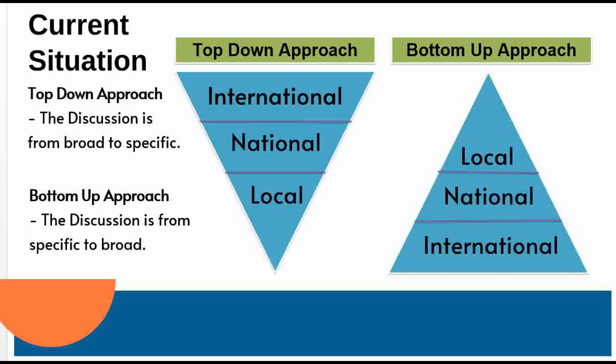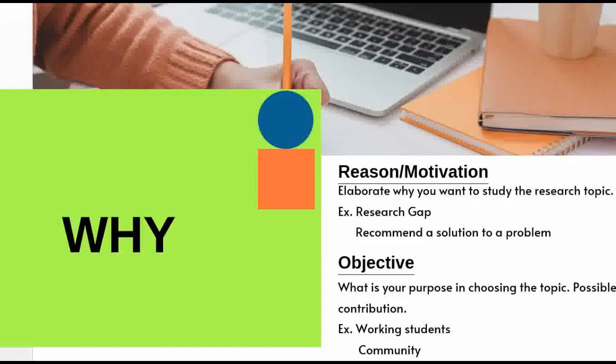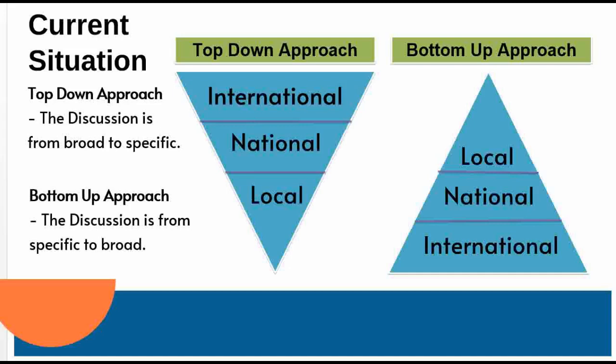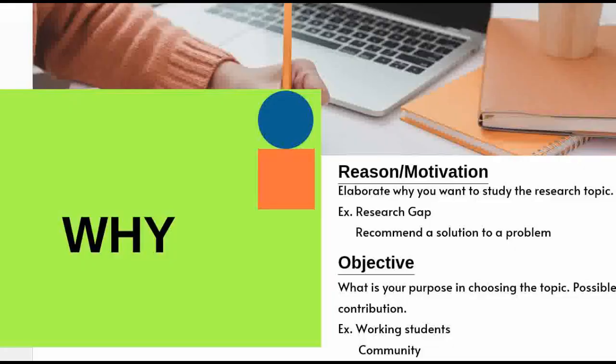After describing the situation, of course you need related literature to complete the story. To be able to say what the situation of working students is nationally or internationally, you need related literature — you need to do research and read. Whether you use a top-down or bottom-up approach, you need related literature describing working students — from the Philippines, Baguio City, Manila, and so on. That is why reading and research are important, from books and internet sources.